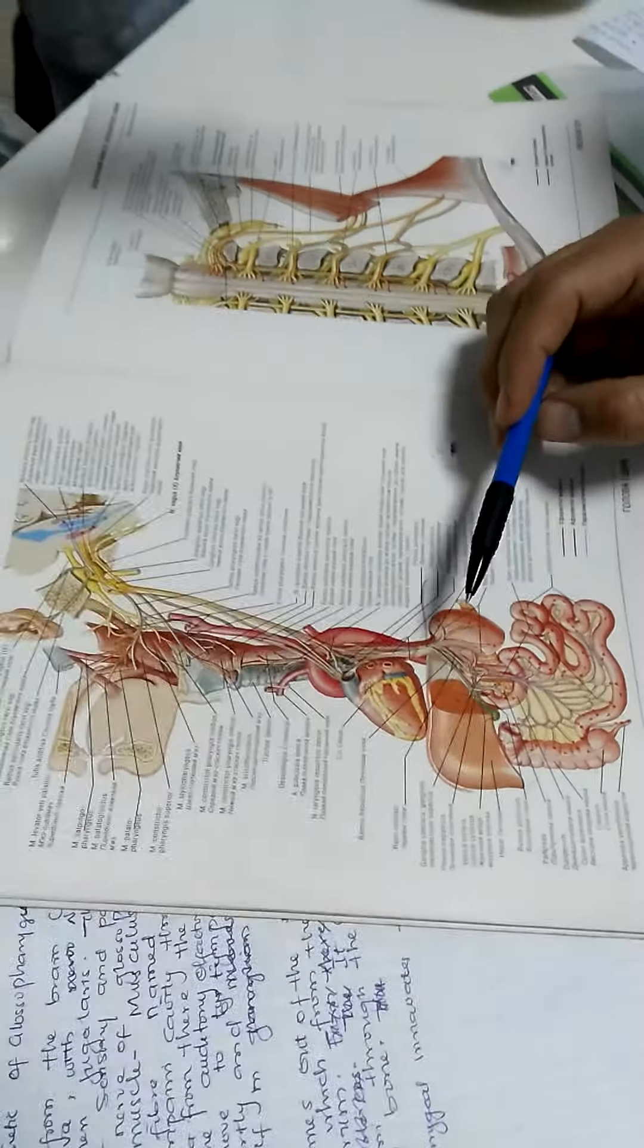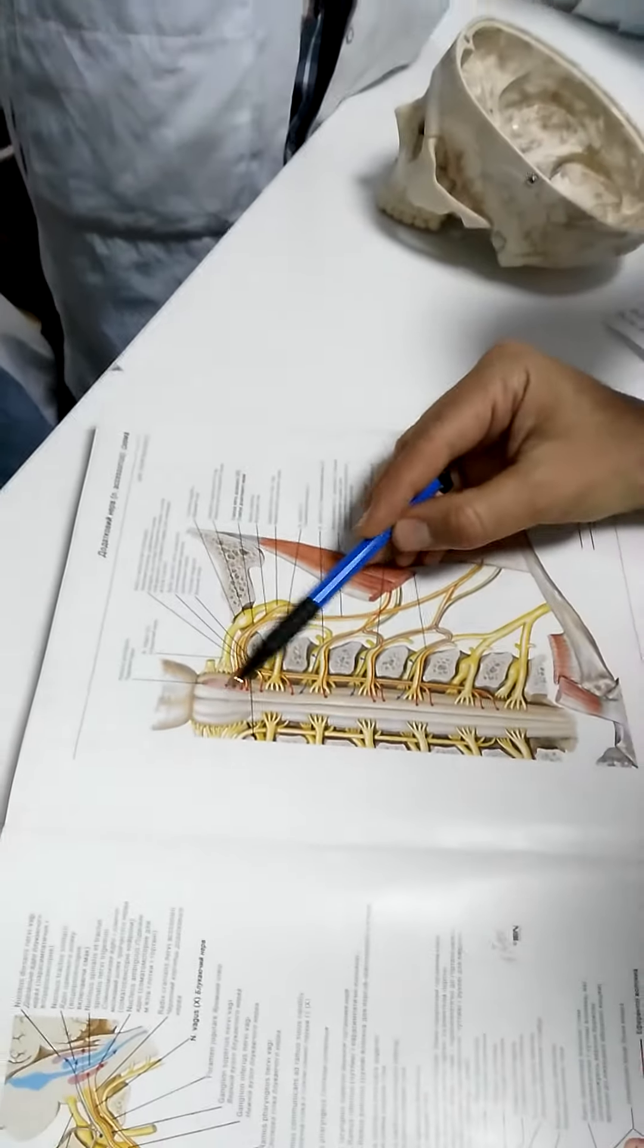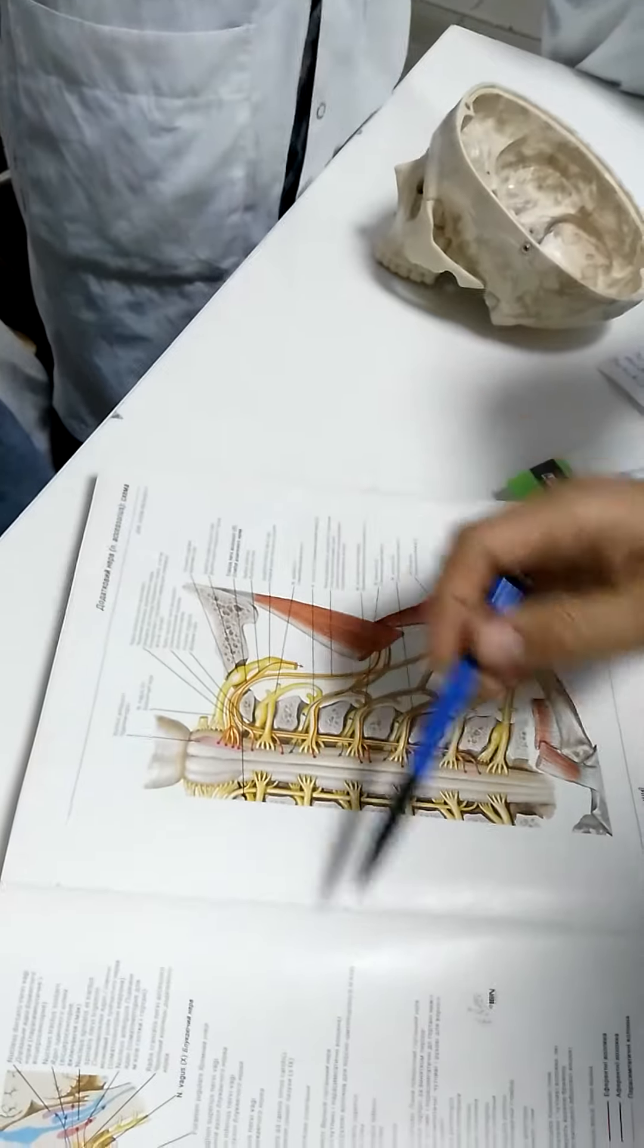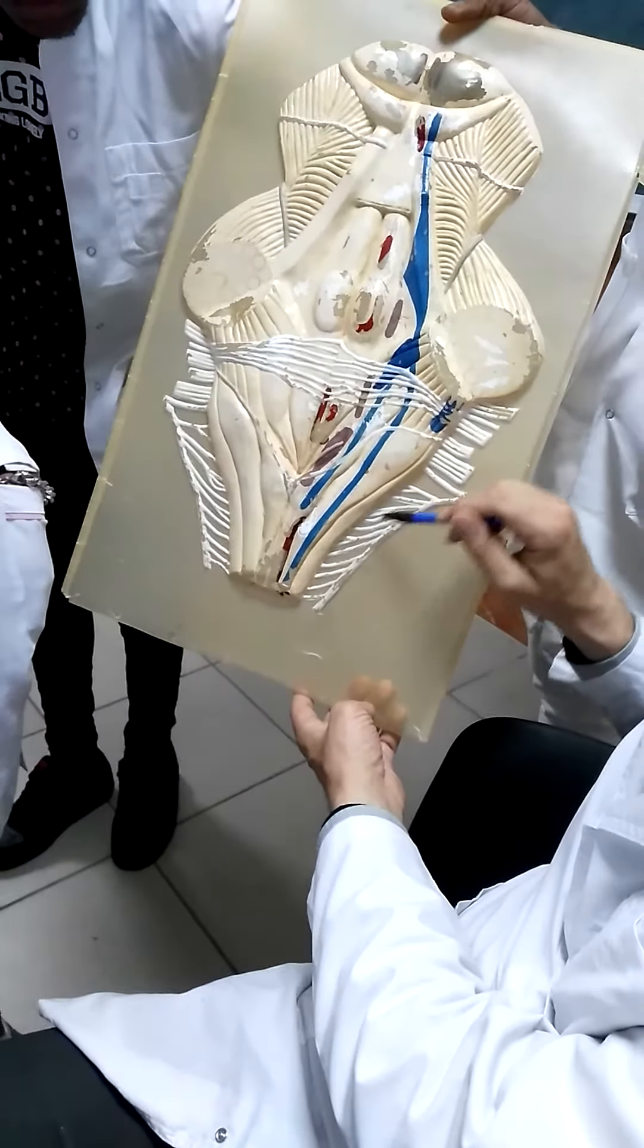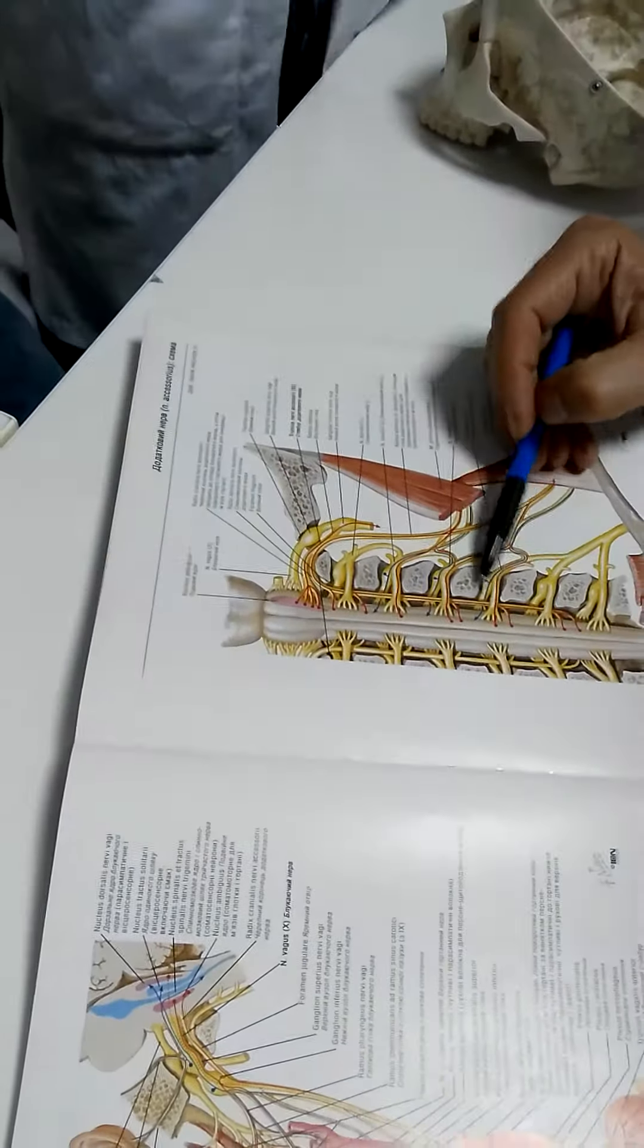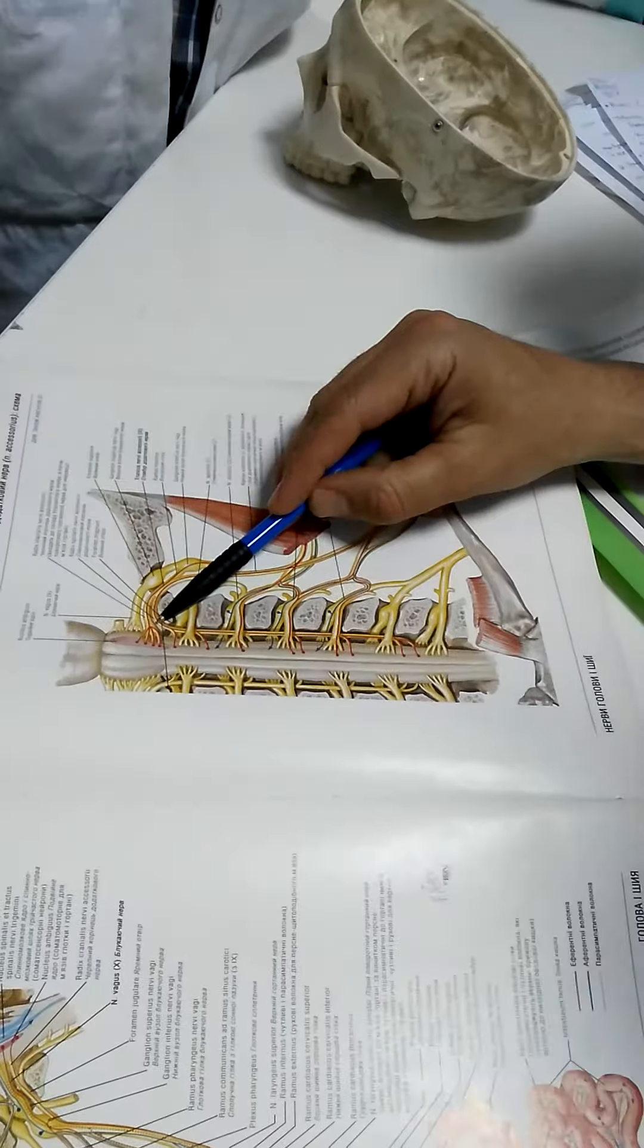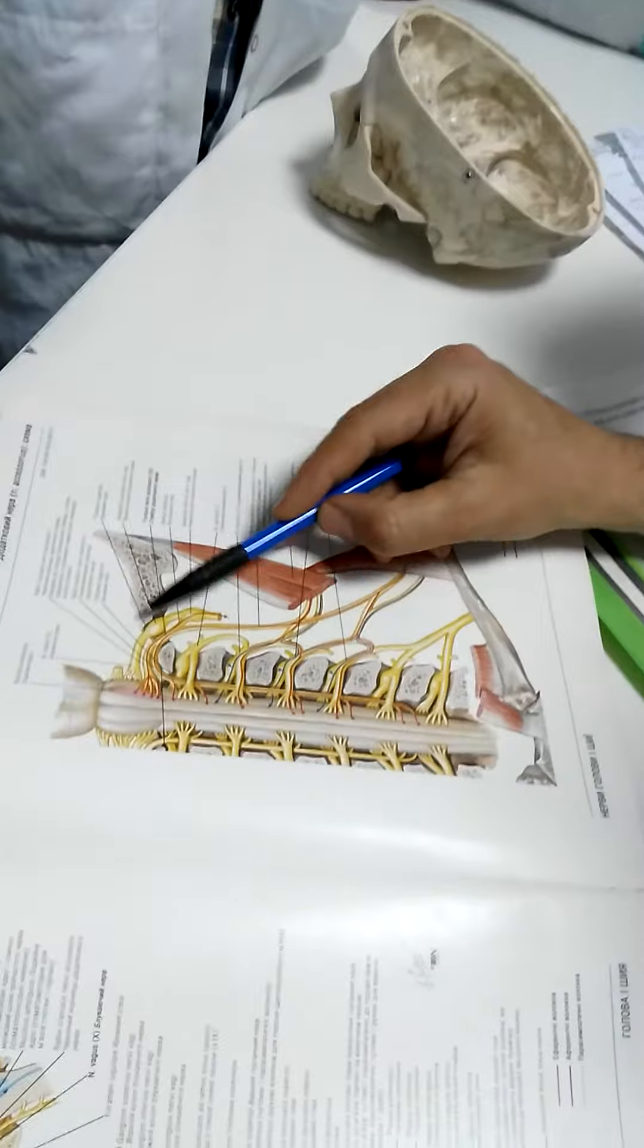Another name for the next classes is nervus accessorius. Nervus accessorius has two types of nucleus, yes. Cranial part is a certain portion of nucleus ambiguous and mainly spinal part. Spinal part in this place. And this nerve starts from the spinal nerve mainly with several roots. Those roots go between anterior and posterior roots of spinal nerve system. Then it elevates to the cavity of the skull through foramen magnum and leaves it through foramen jugulare together with nervus vagus and glossopharyngeus.